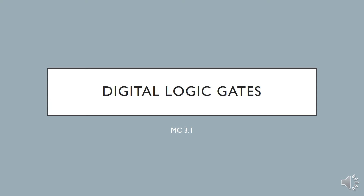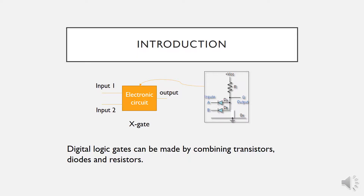Everything we'll see later on will actually relate to how we understand digital logic gates correctly. Logic gates are the basic building blocks of any digital system. A logic gate is an electronic circuit having one or more than one input and usually one output.